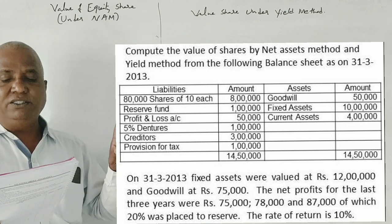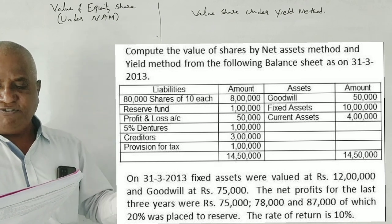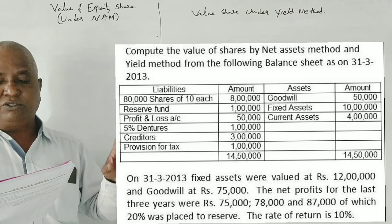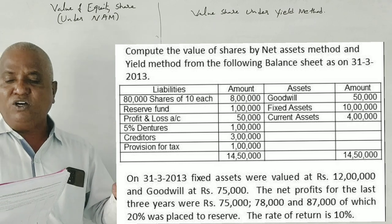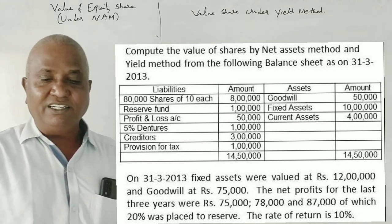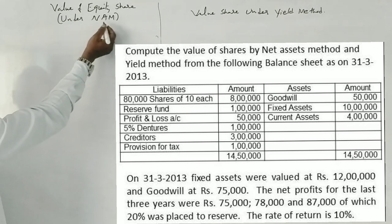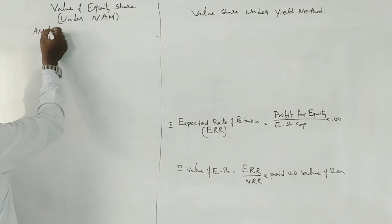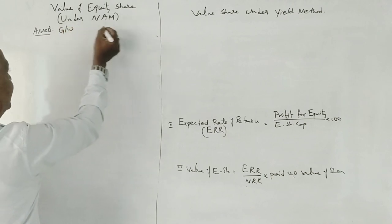On 31st March 2013, fixed assets were valued at rupees 12 lakhs and goodwill at rupees 75,000. The net profits for the last three years were rupees 75,000, 78,000, and 87,000, of which 20% was placed into reserve. The rate of return is 10%.